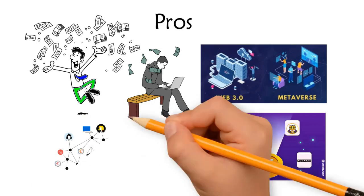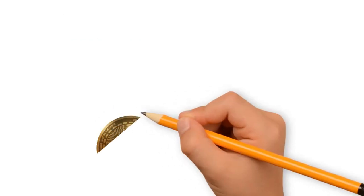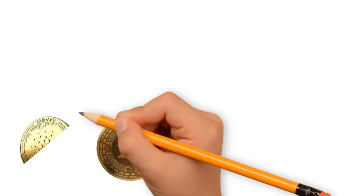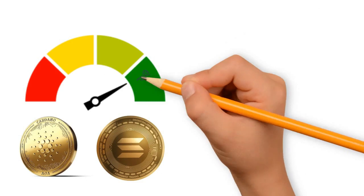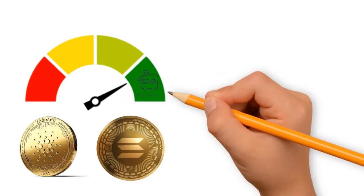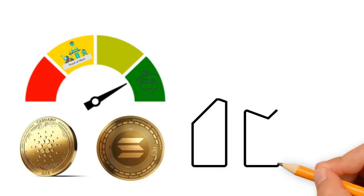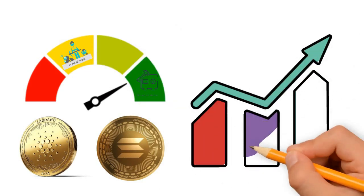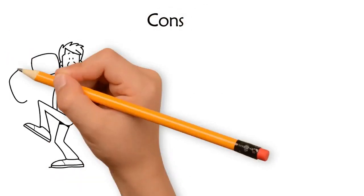Number two - other altcoins including SOL and ADA aimed to increase scalability and speed. These operate based on the proof of stake mechanism, which yields quicker confirmations as against proof of work used by Bitcoin. With further enhancements, these coins might perform more efficiently than their predecessor.